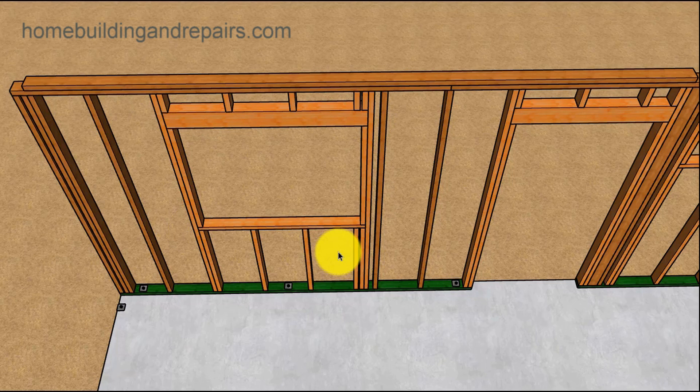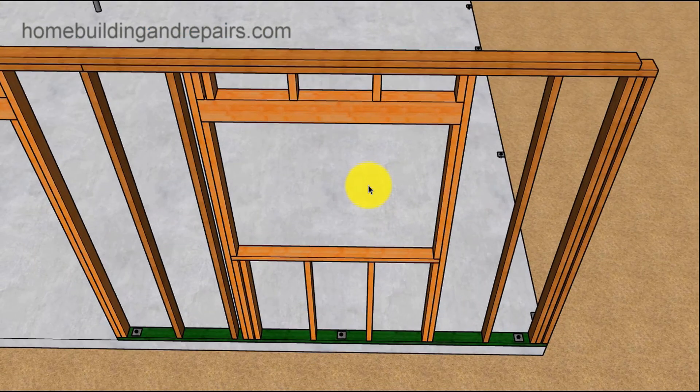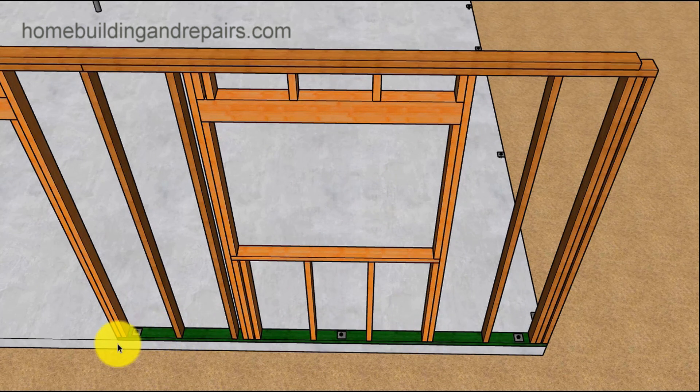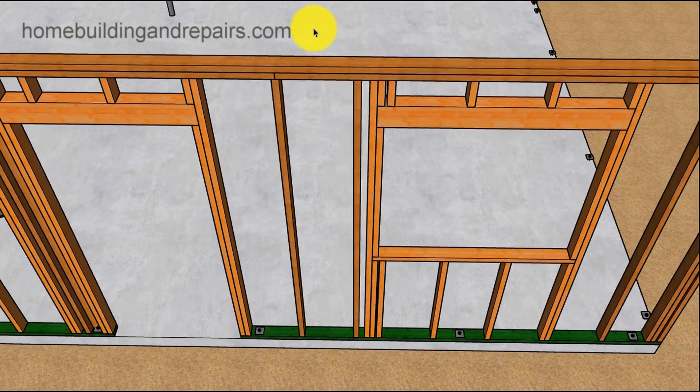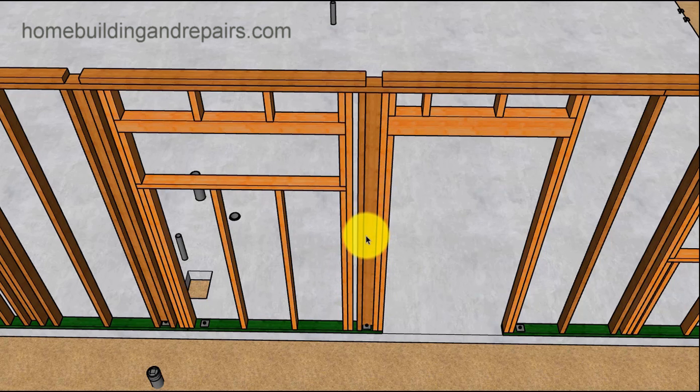Living room window here. And again, you can always change the sizes of these windows. Anchor bolts within 12 inches from each break. Front door, bathroom window from the outside. And again, our wall framing backing.